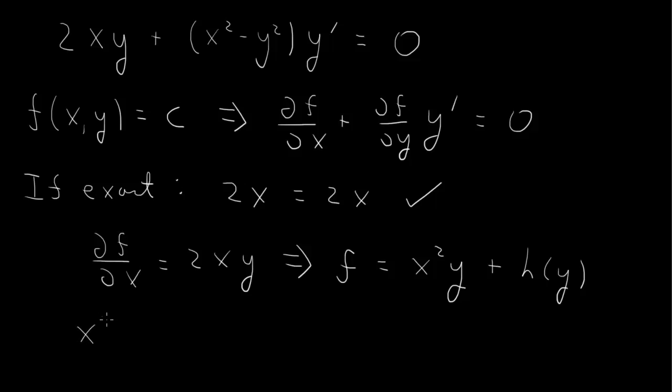So we get x squared minus y squared is equal to the partial of f with respect to y. The first term is x squared, and the derivative of h with respect to y will be h prime of y.